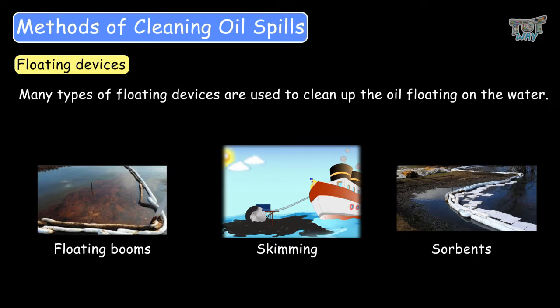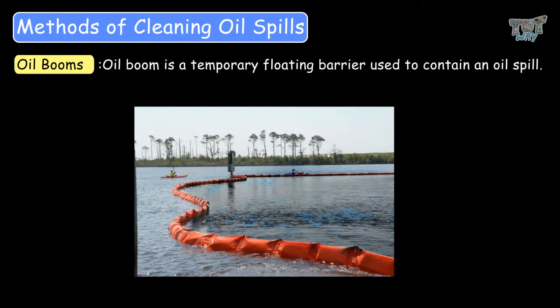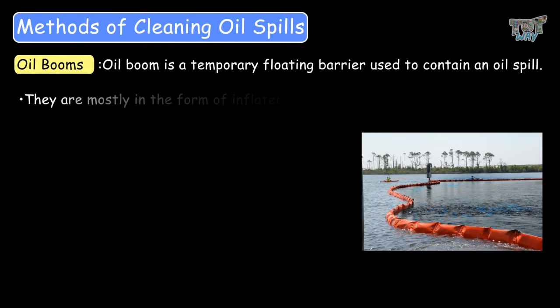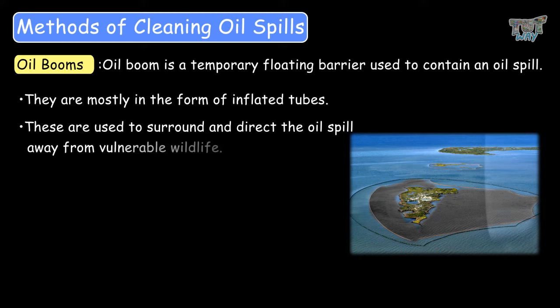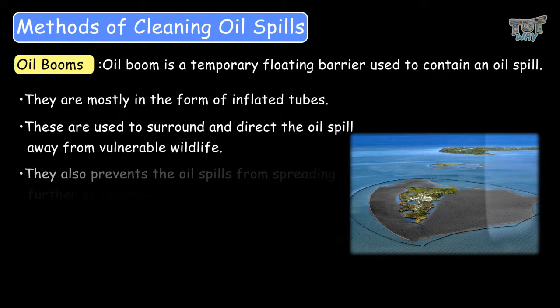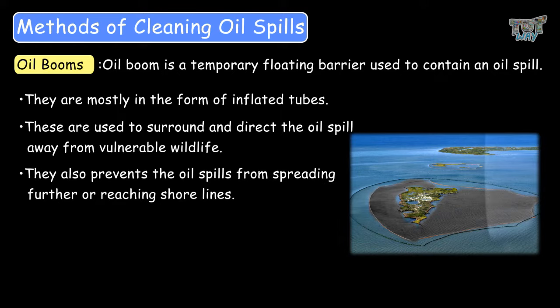Let's first learn about oil booms, which are temporary floating barriers to contain the oil spill. They are mostly used in the form of inflated tubes. They are used to surround the oil and direct the oil spill away from the vulnerable wildlife, and also they prevent the oil spill from spreading further or reaching the shorelines.